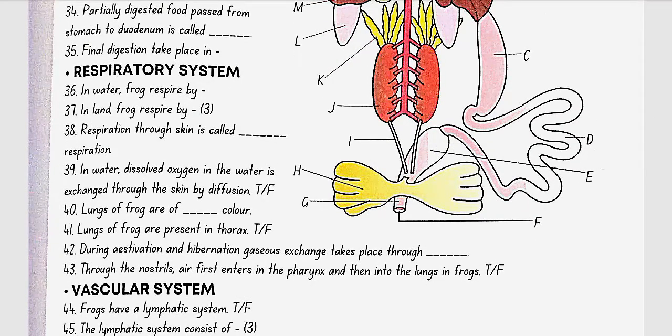Respiratory system. In water, frog respire by skin. In land, frog respire by buccal cavity, skin and lungs. Respiration through skin is called cutaneous respiration. In water, dissolved oxygen in the water is exchanged through the skin by diffusion. Yes, true.